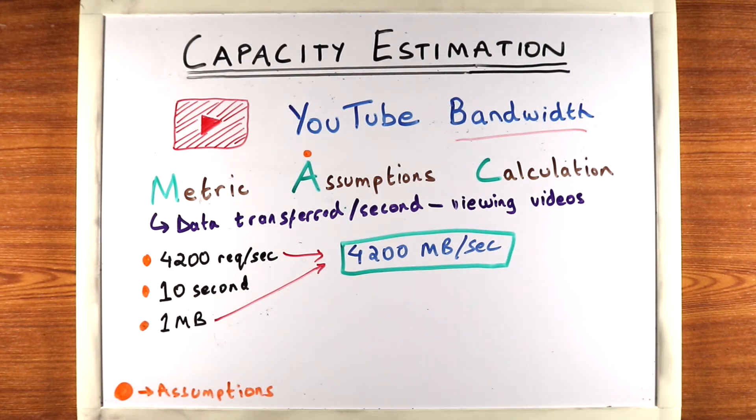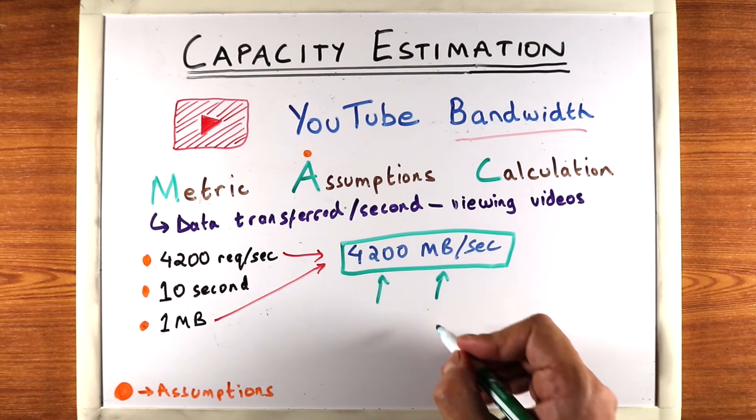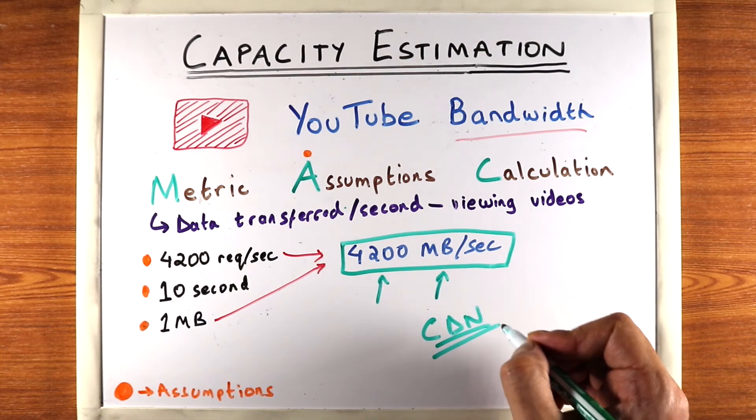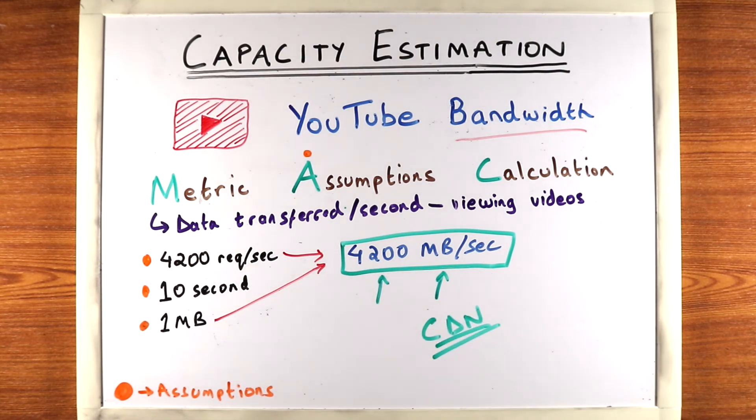Now we have to be really careful with these numbers that estimate capacity because we're really not sure what our system is yet. Our system might be utilizing CDNs which means a lot of the bandwidth might be handled by CDNs. On the other hand these assumptions that we made might be too high level.